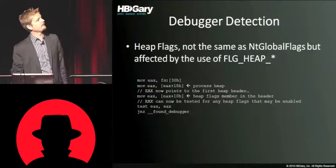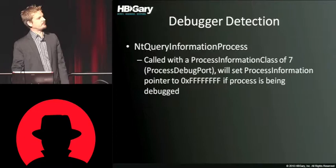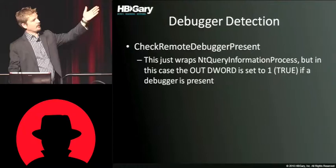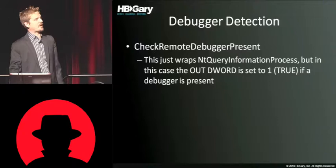More on heap flags — things that are not obvious, you wouldn't think would be changed. The debugging environment significantly changes when you're debugging. We can also check for the debug port and get a response back letting us know whether or not there's a debugger. There's another function call — CheckRemoteDebuggerPresent — that will do something similar, check to see if a debugger is present. But it just wraps the same query, NtQueryInformationProcess, and sets the flag to true.